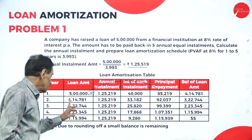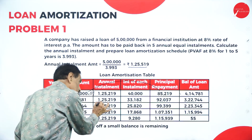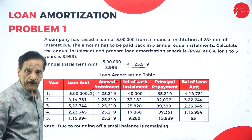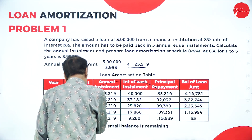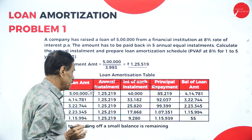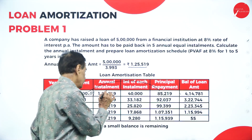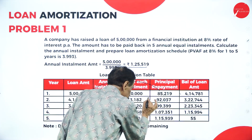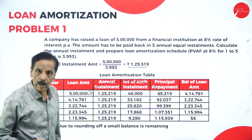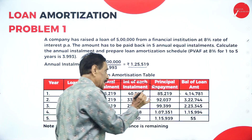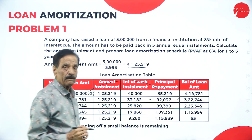The balance after Year 1 is 4 lakh 14,781. This installment amount of 1 lakh 25,219 is constant each year. Interest on 4 lakh 14,781 works out to 33,182. From the installment, deduct the interest; the difference is 92,037. The balance remaining is 3 lakh 22,744.